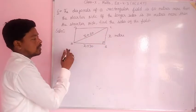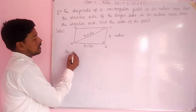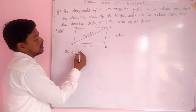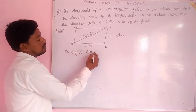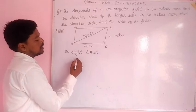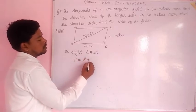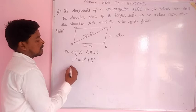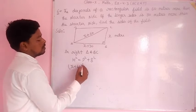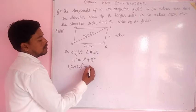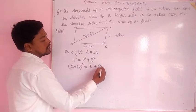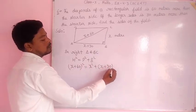You can see the right angle triangle here. In right triangle ABC, hypotenuse squared equals perpendicular squared plus base squared. So (X plus 60) whole squared equals X squared plus (X plus 30) whole squared.